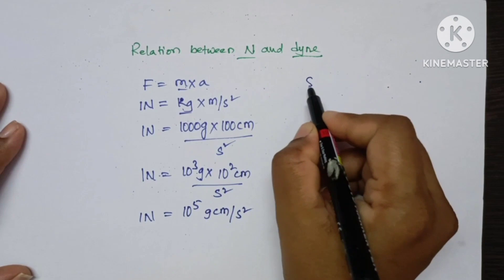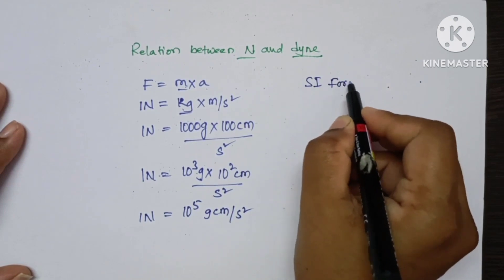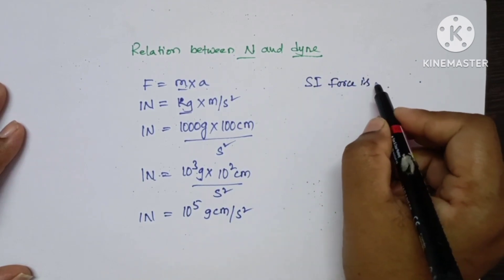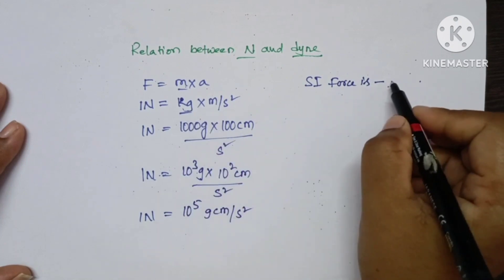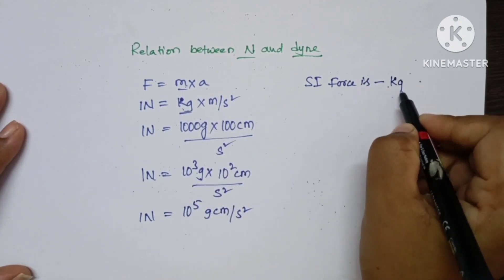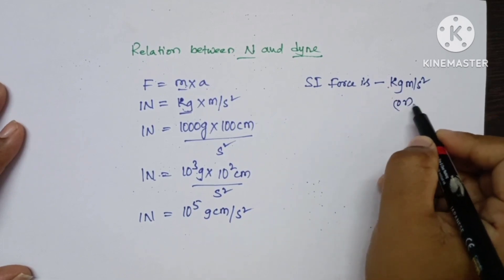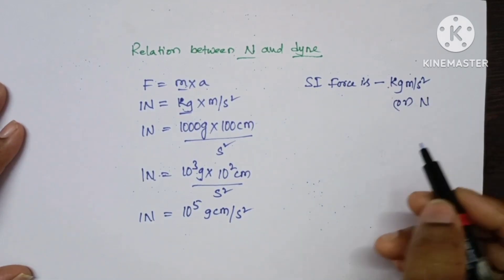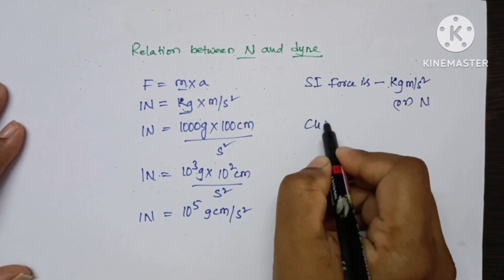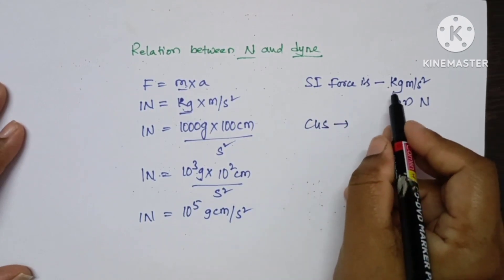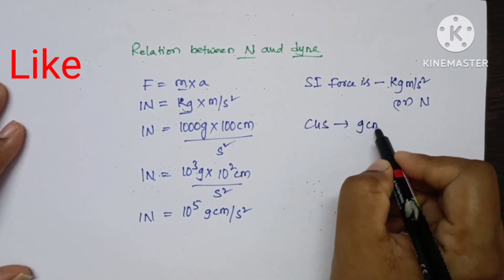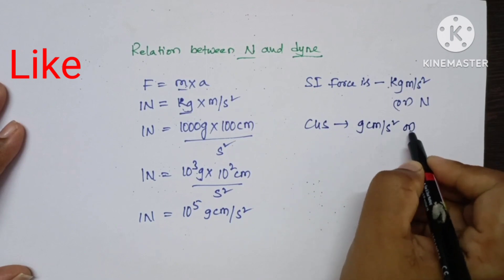See, SI unit of force is kg meter per second square or Newton, and the CGS unit of force is gram centimeter per second square or Dyne.